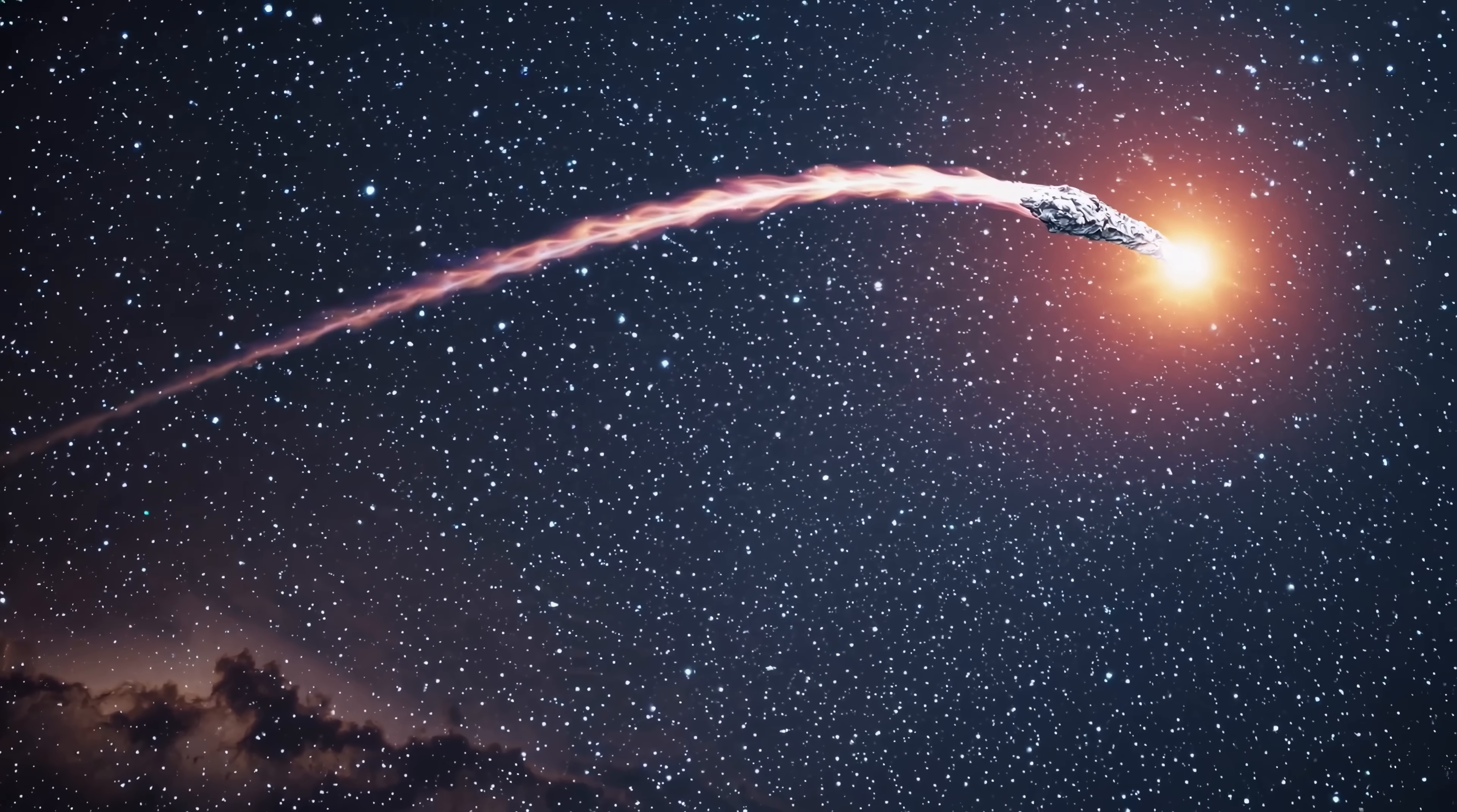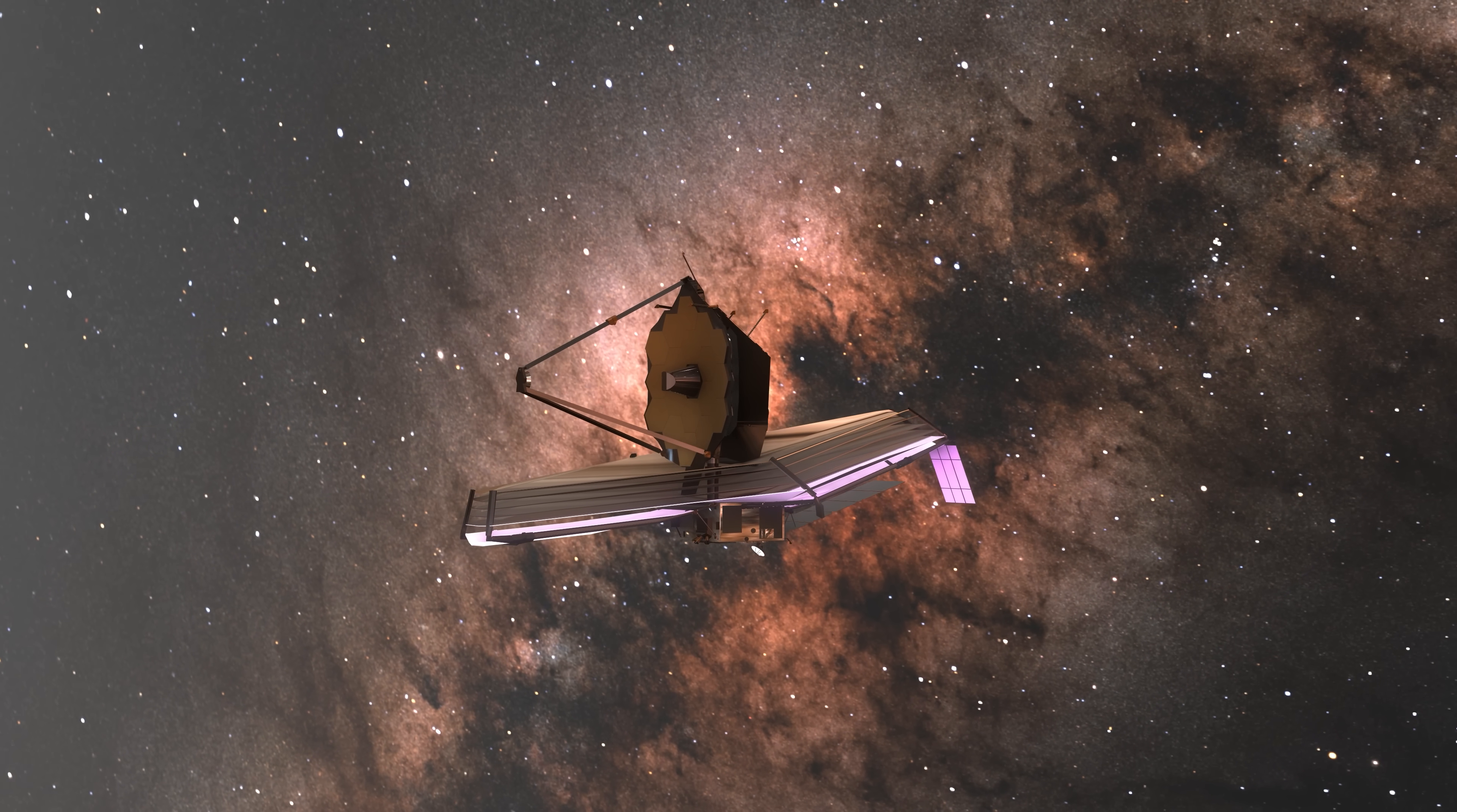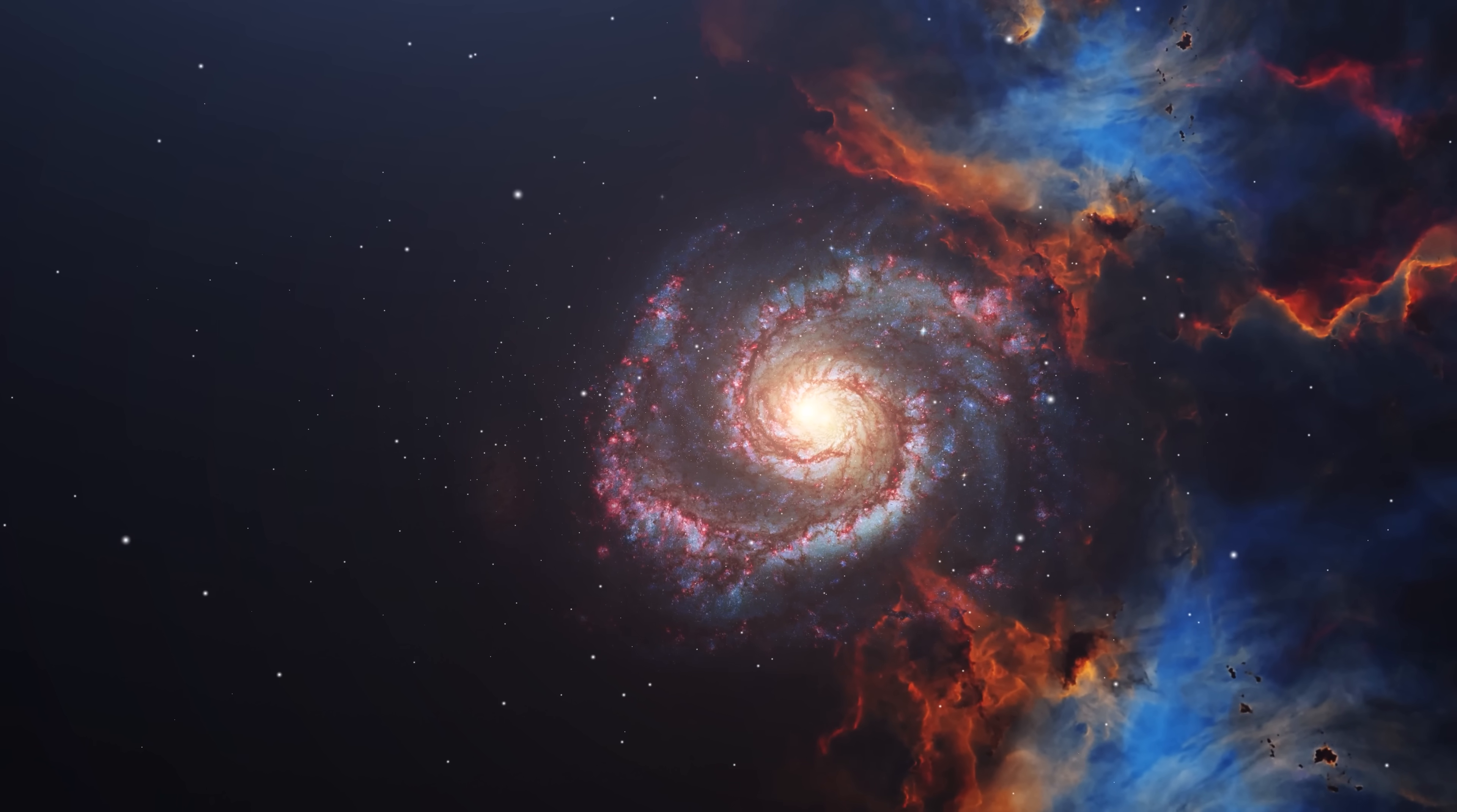Stars that died billions of years ago. Planets with skies of molten sand. This isn't science fiction. It's exactly what the James Webb Telescope has been doing since 2021. And in just two years, it's exposed five cosmic secrets so shocking they're rewriting science textbooks.